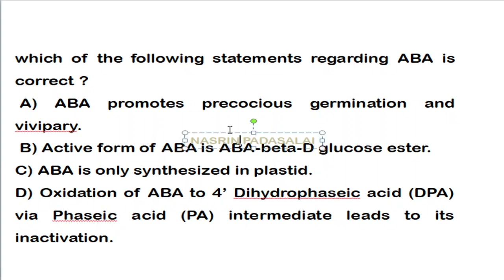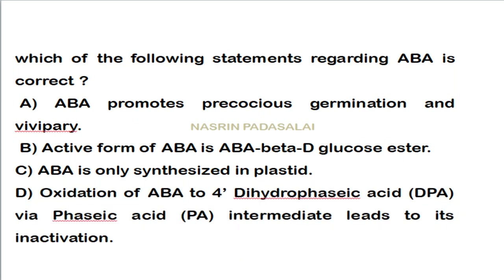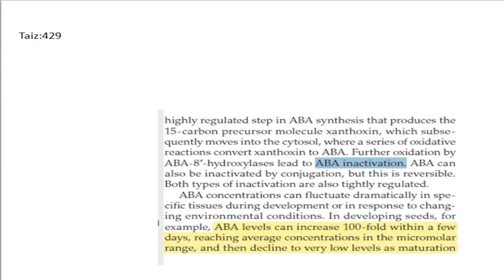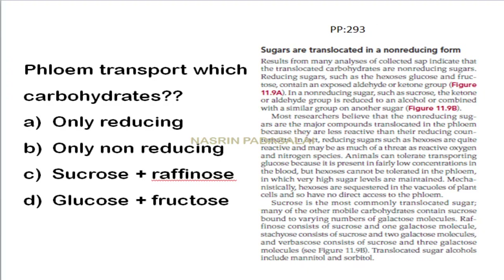The last statement is correct: oxidation of ABA by hydroxylation enzyme leads to the inactivation of abscisic acid. This is found on page 429 of the textbook. So oxidation of ABA leads to its inactivation — that is the correct statement.